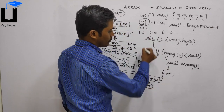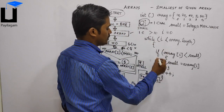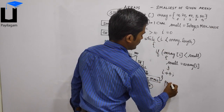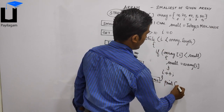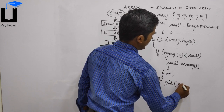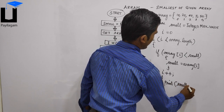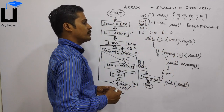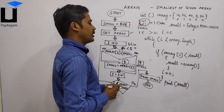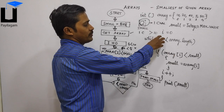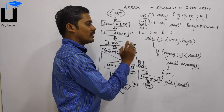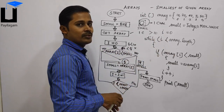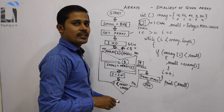After incrementing i plus plus, when the loop completes, we print the small value. This is the program — it will execute using a while loop or a for loop as well.